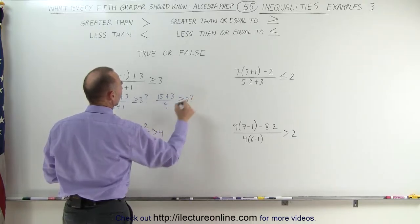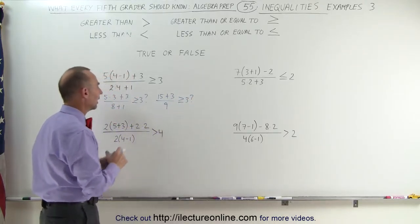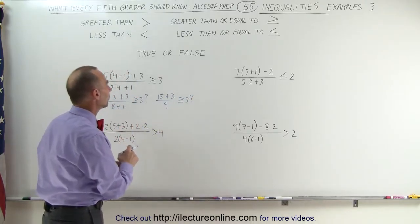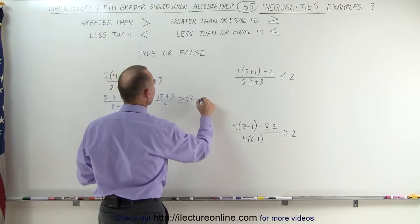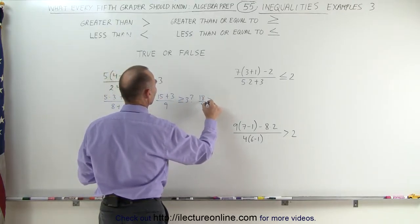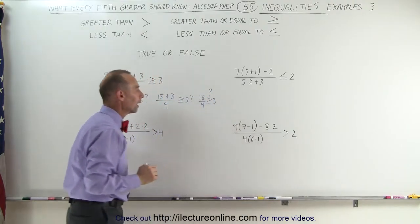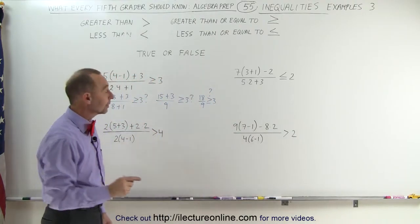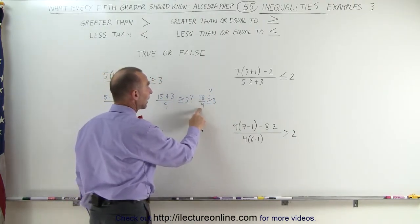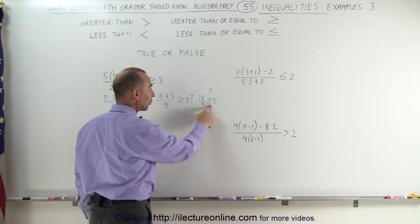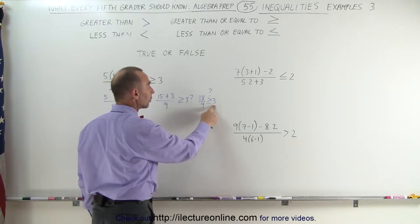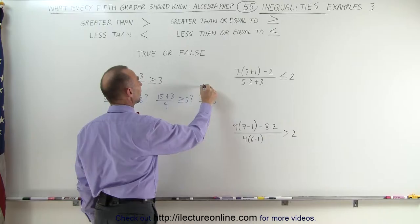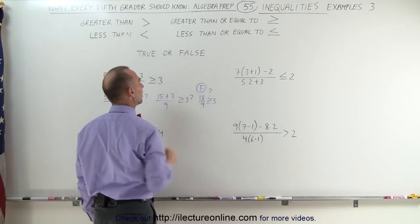Finally, we add the numerator together: 15 plus 3 gives us 18 divided by 9. Is that greater than or equal to 3? We can tell that 18 divided by 9 is only 2, and 2 is not greater than or equal to 3. Therefore this is a false statement.